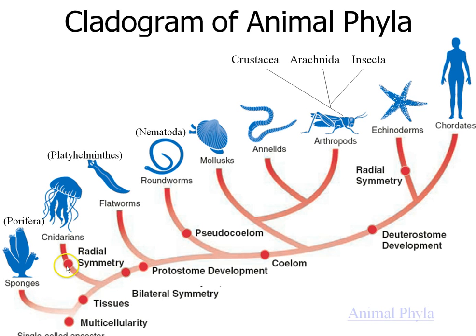Here we have radial symmetry in the cnidarians, the jellyfish. Bilateral symmetry — two sides being mirror images — applies to every other animal, including the echinoderms. As a larva, echinoderms have bilateral symmetry, but as adults they have radial symmetry. There are only two animals on this planet that have radial symmetry: the cnidarians and the echinoderms.